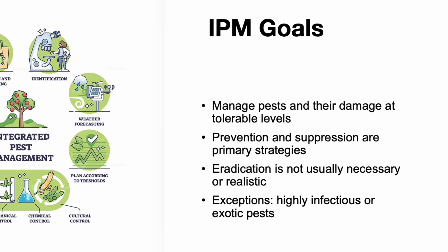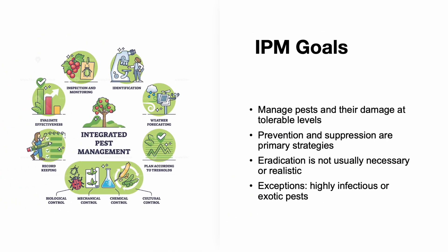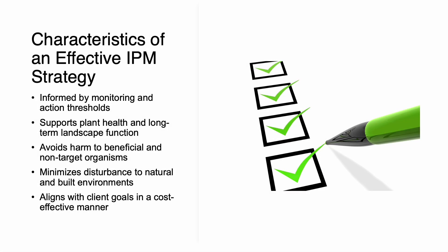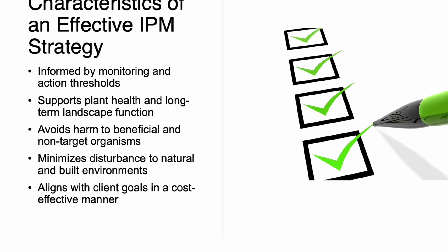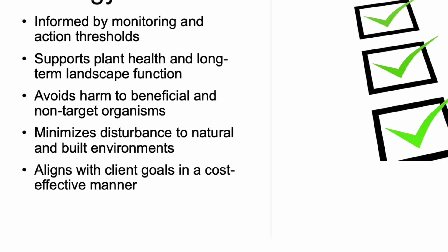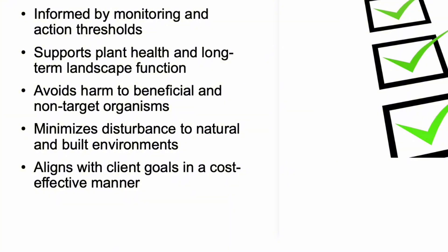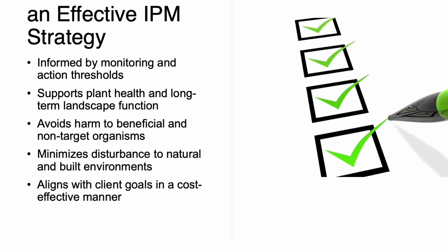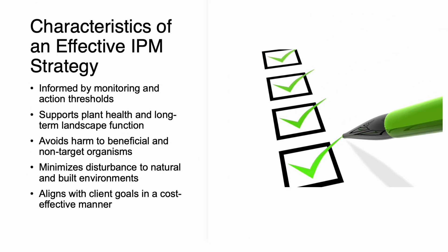Exceptions include highly infectious diseases or invasive species that pose major risks to the landscape. An effective IPM strategy involves regular monitoring and action thresholds to guide decision-making. It works alongside other PHC practices to promote plant vigor, avoids harming beneficial organisms, keeps environmental disruption to a minimum, and always takes cost-effectiveness and client goals into account.